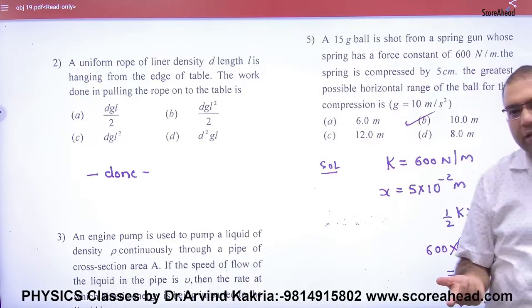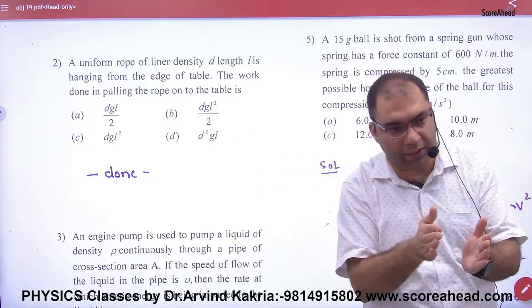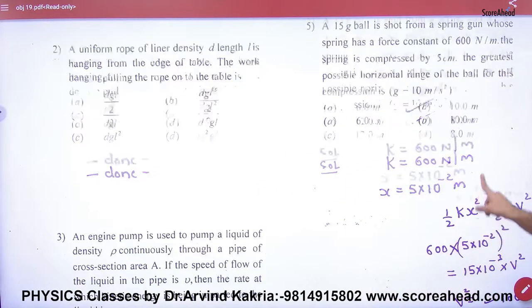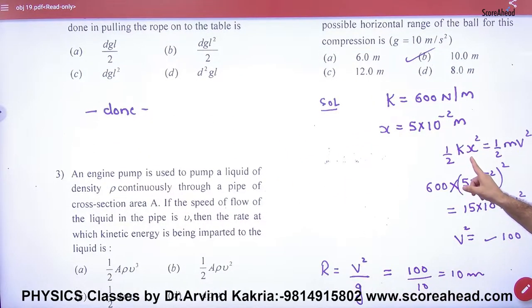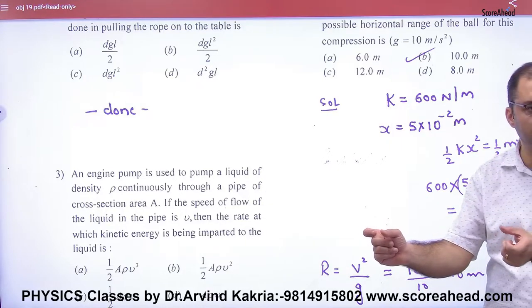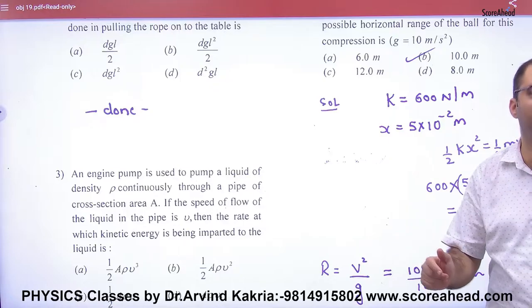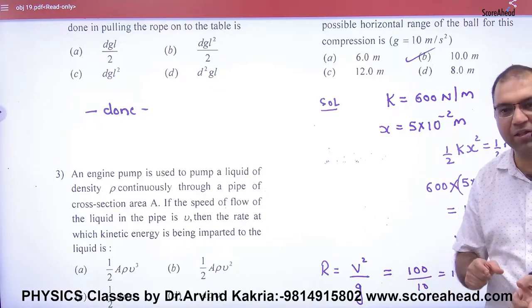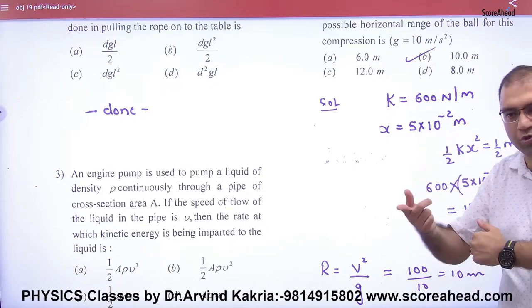So what is the concept? When you have pressed your spring, then what energy is stored in the spring? Half k x square. Then the spring is opened - all the spring energy converts to kinetic energy. So you understand, spring stored energy is equal to half mv square. The spring will be used in this way.